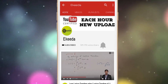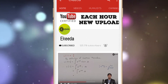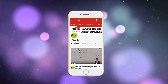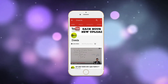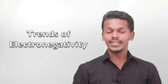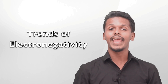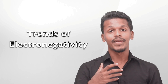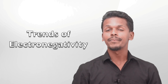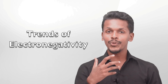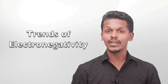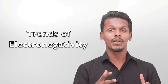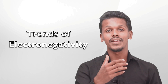Subscribe to the IGRA channel and press the bell icon to get updates about latest engineering, HSE, and IIT JEE Mains and Advanced videos. In the last lecture we discussed electronegativity and the factors that affect it. Now we are going to talk about the periodic trends in electronegativity for the elements present in the periodic table.